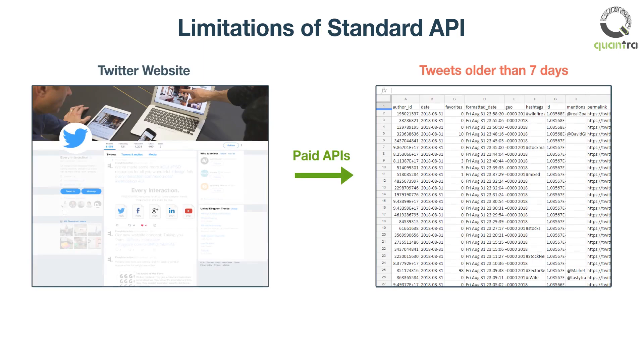If you want to fetch tweets older than 7 days, then you can opt for the paid versions of the Twitter API.